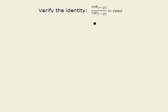To investigate this identity, we must remember the negative identities. We will draw our unit circle and look at x as π/4.